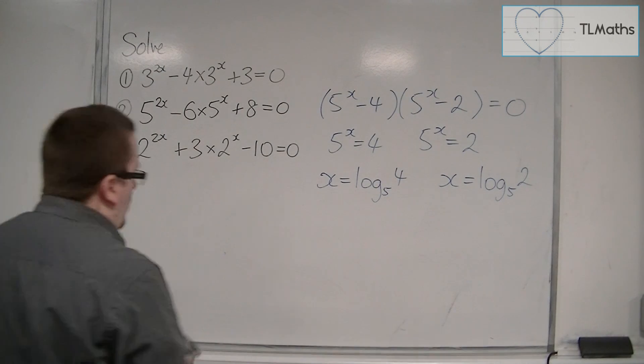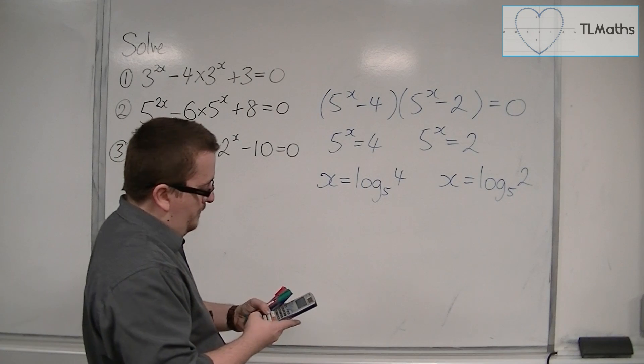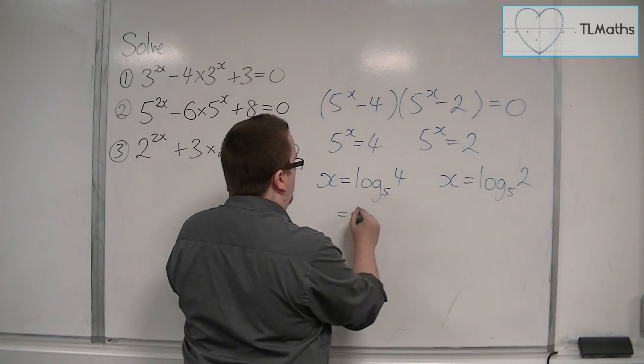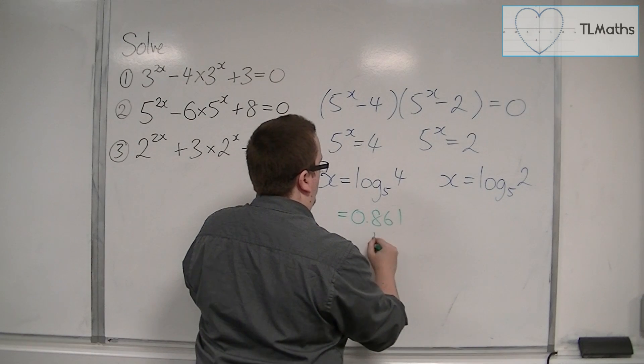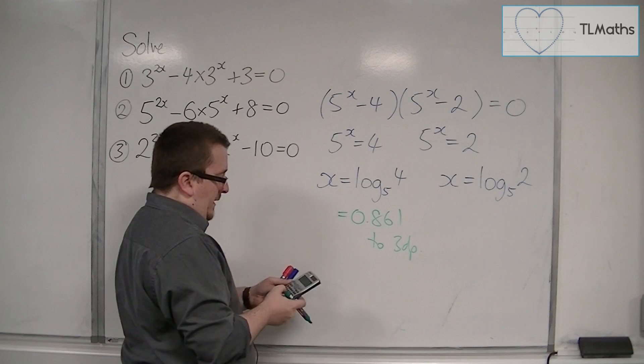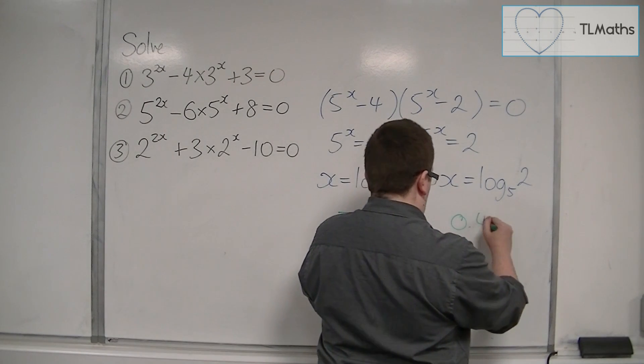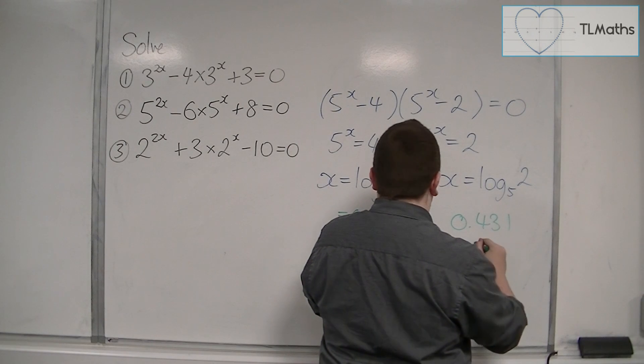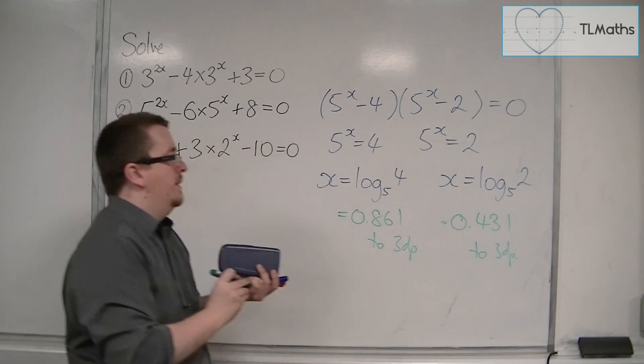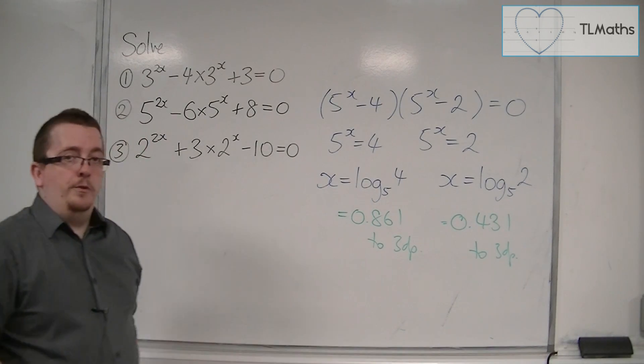You can get decimal equivalents for them on your calculator. Log base 5 of 4, so that's 0.861 to 3 decimal places. And log base 5 of 2 is 0.431 to 3 decimal places. So those would be the two solutions for number 2.